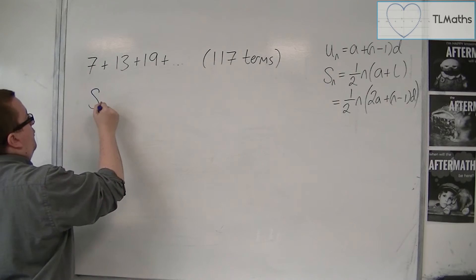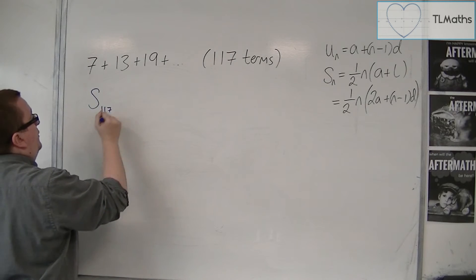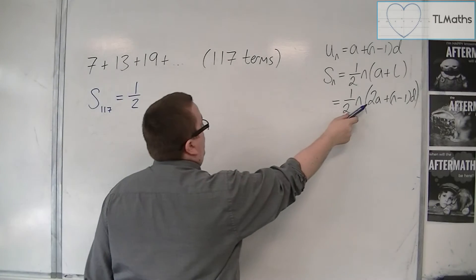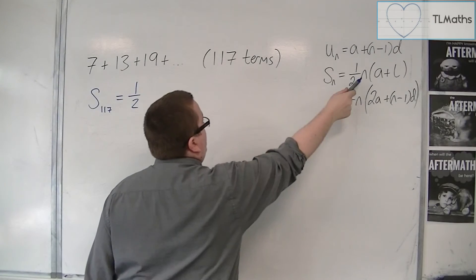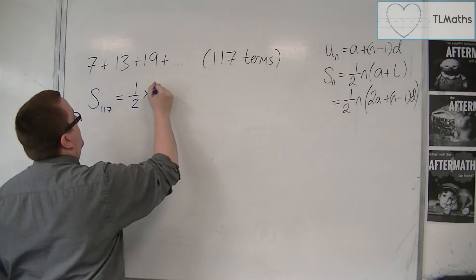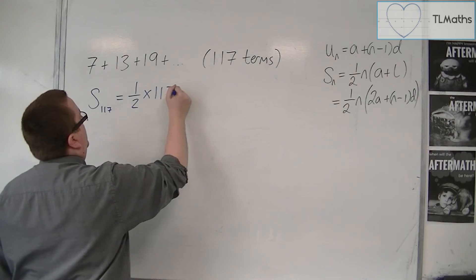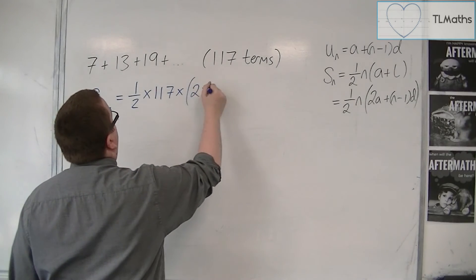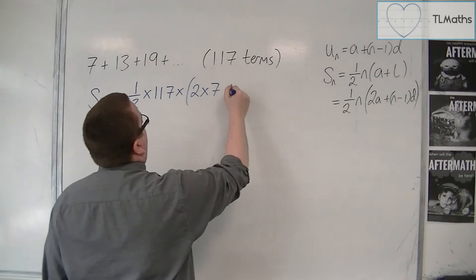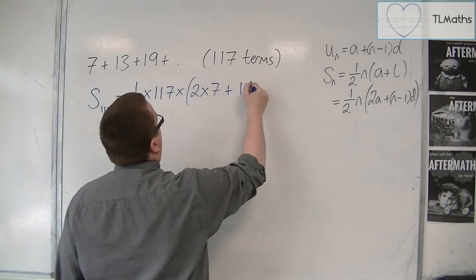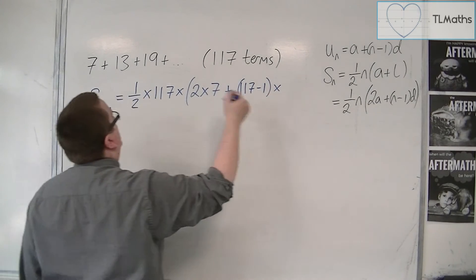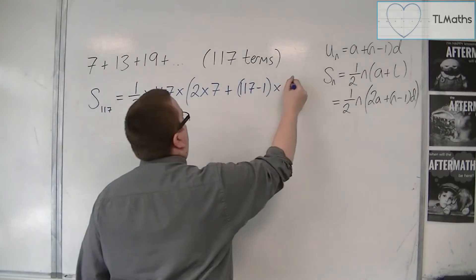So the sum of the first 117 terms — I've got to use this second formula here because I don't know what L is — is one half times N times 2 lots of A, so 2 lots of 7, plus N minus 1, so 117 minus 1, times the common difference, which is 6.